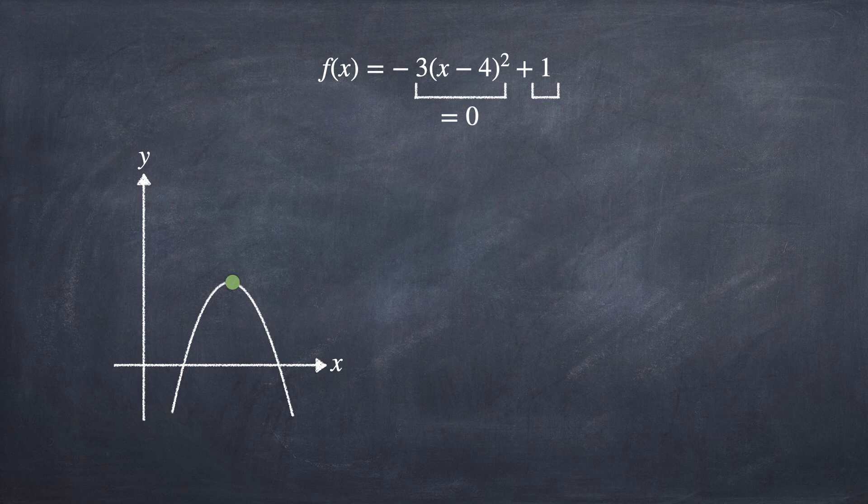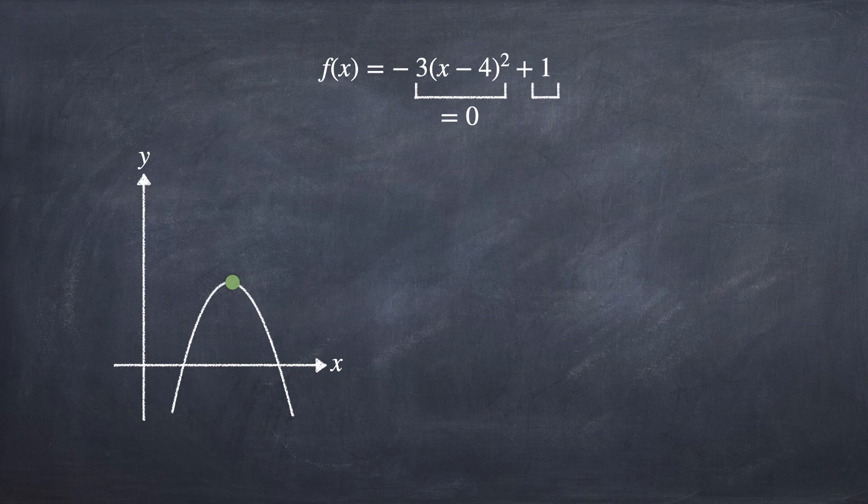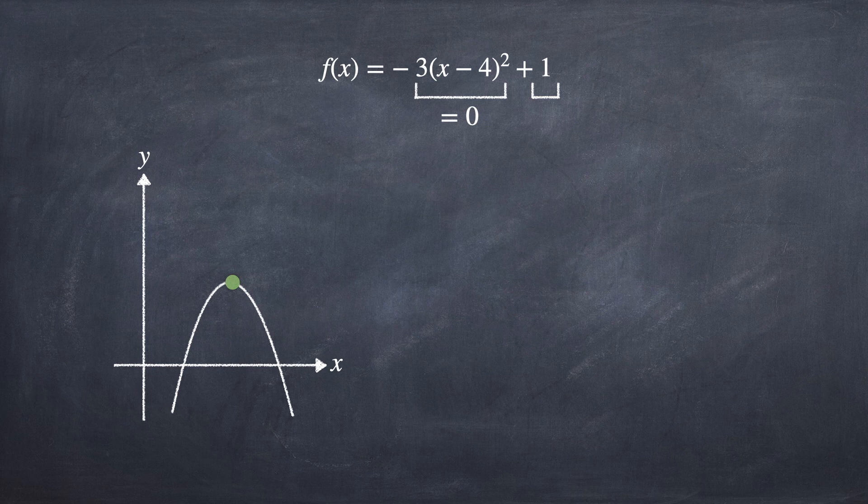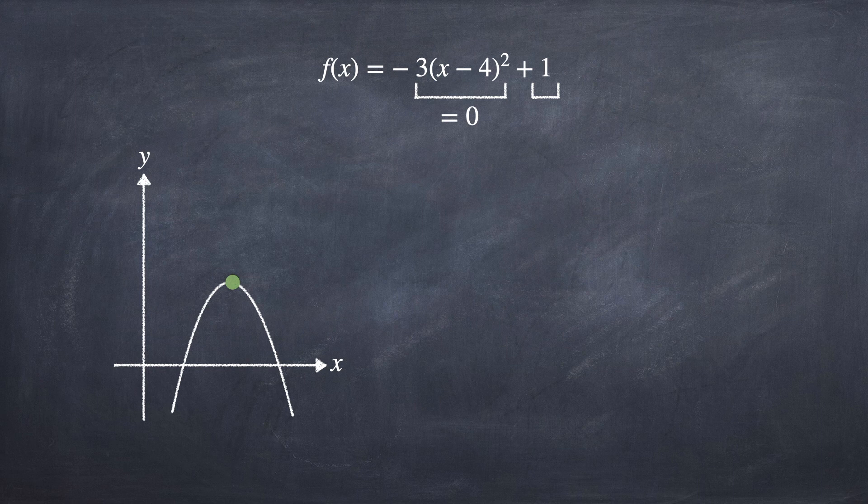To find the maximum y value of this function, we also let the first part equal to 0. This is because the first part will always be negative due to the product of -3 and the square. Therefore, the first part will always reduce the value of y if we do not make it 0.